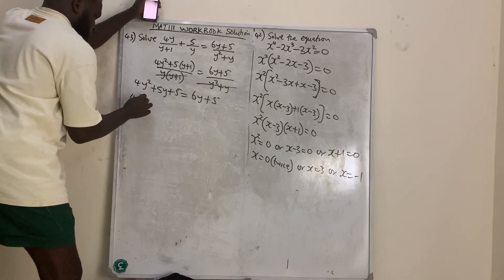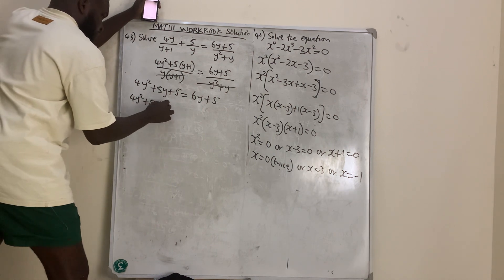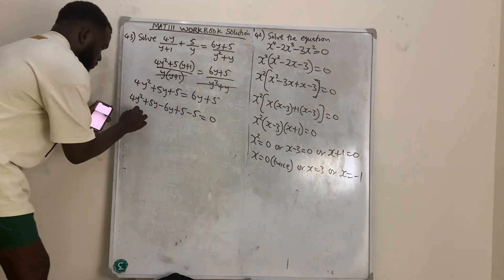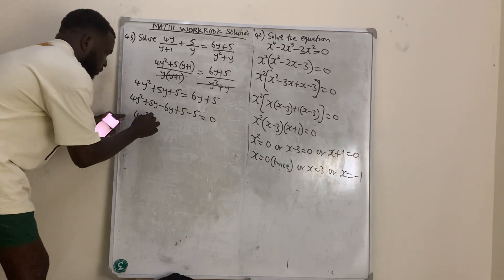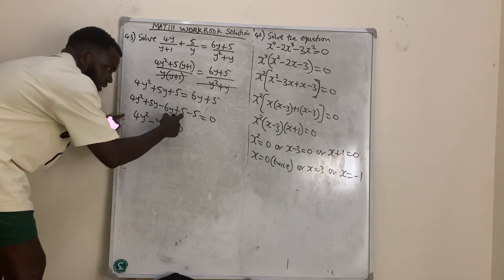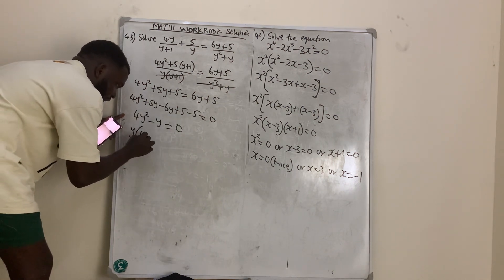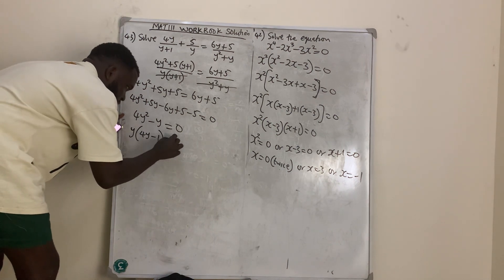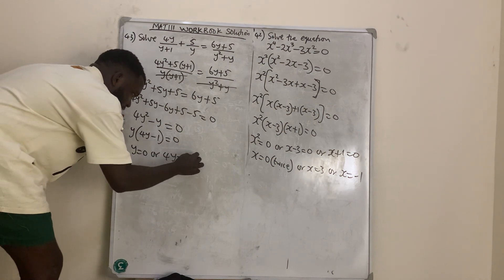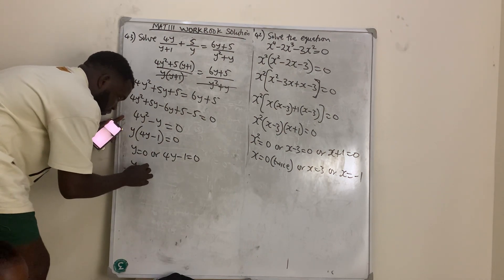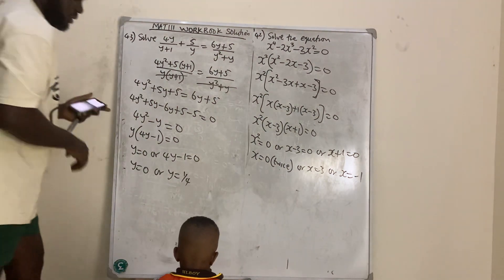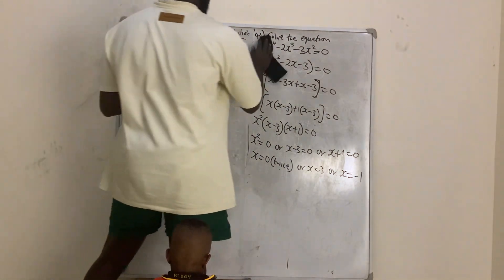Bringing everything to one side: 4y squared plus 5y minus 6y plus 5 minus 5 equals zero, which simplifies to 4y squared minus y equals zero. Factoring out y: y(4y minus 1) equals zero. Therefore y equals 0 or y equals 1 over 4.